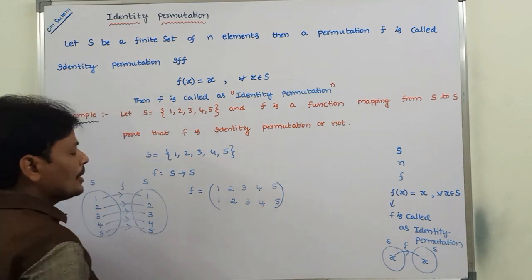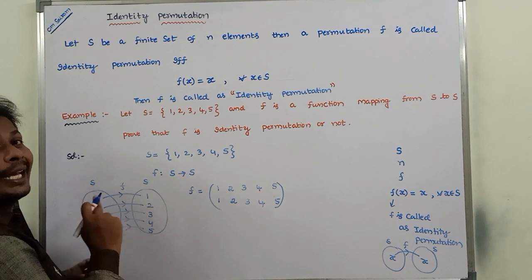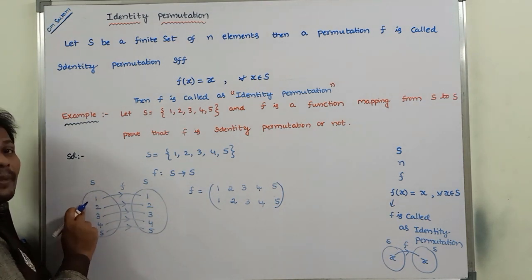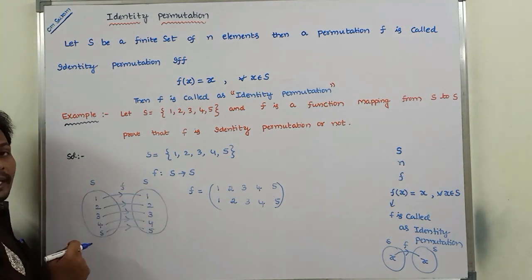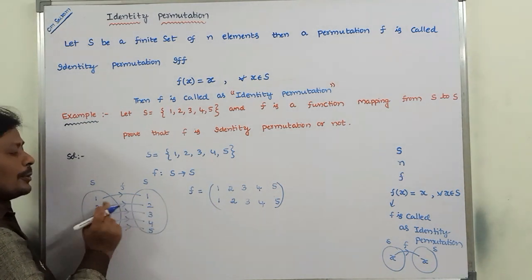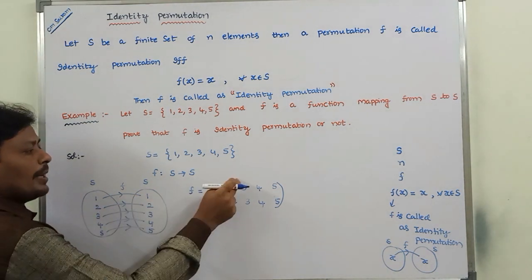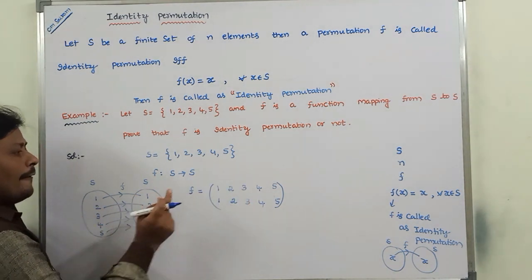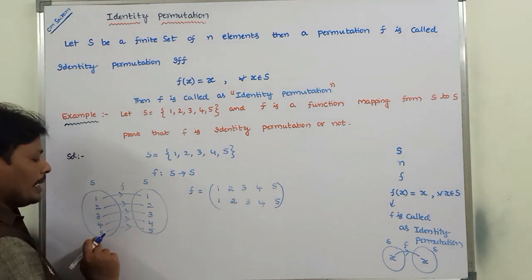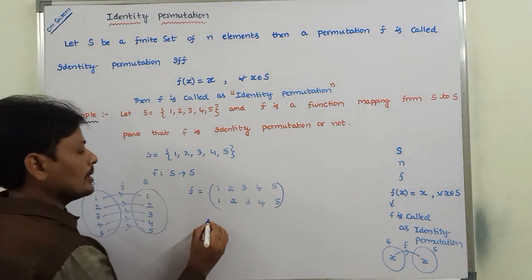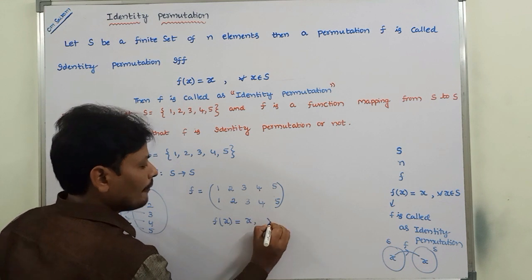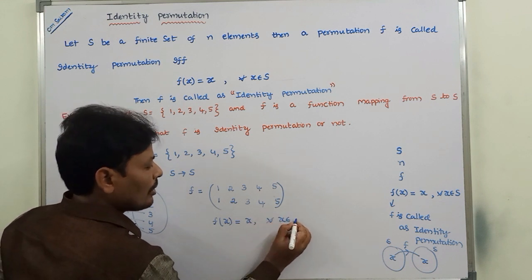We can take any element in set S — the image of that element is the same element. That means: 1's image is 1, 2's image is 2, 3's image is 3, 4's image is 4, 5's image is 5. Therefore f(x) is equal to x, for all x belonging to S.